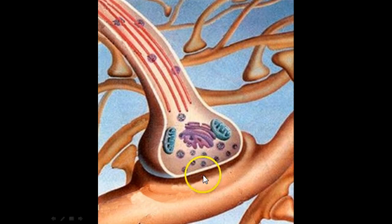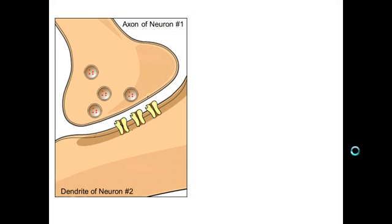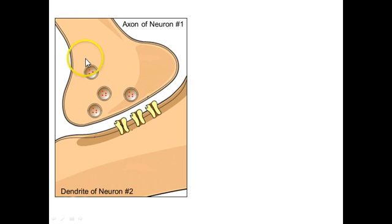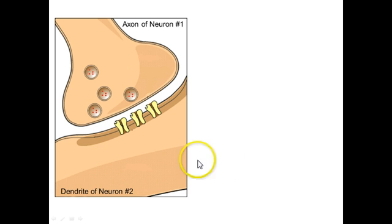This tiny little gap is called the synapse. Here is a simplified diagram — this would be a good thing to copy into your notes, as we're going to be adding several pieces of information on the right. At the top we see the axon from neuron number one. Our nerve impulse is coming from this top left corner down to the axon terminal, going to have to cross this synapse, and then be picked up by the dendrite of neuron number two.